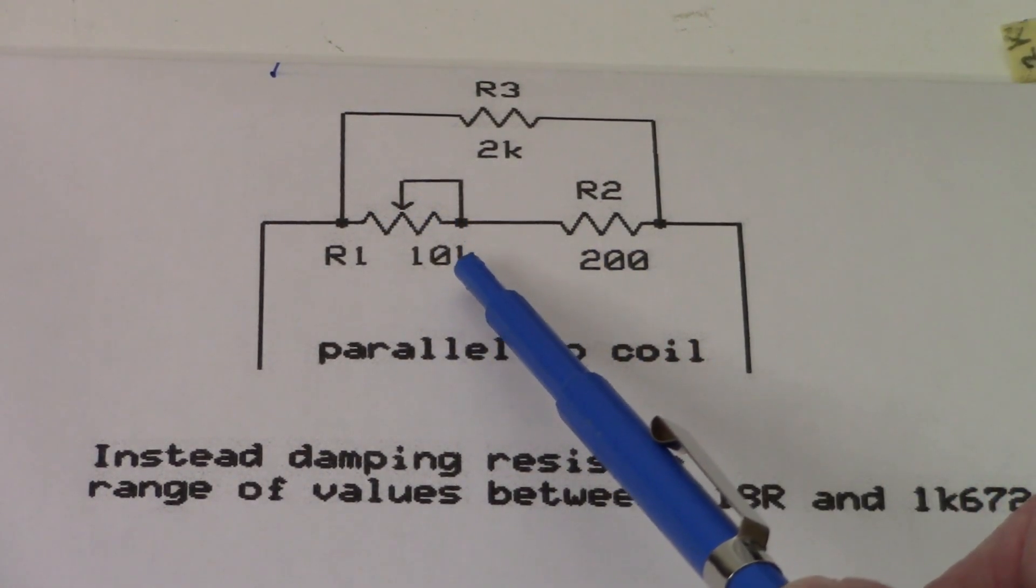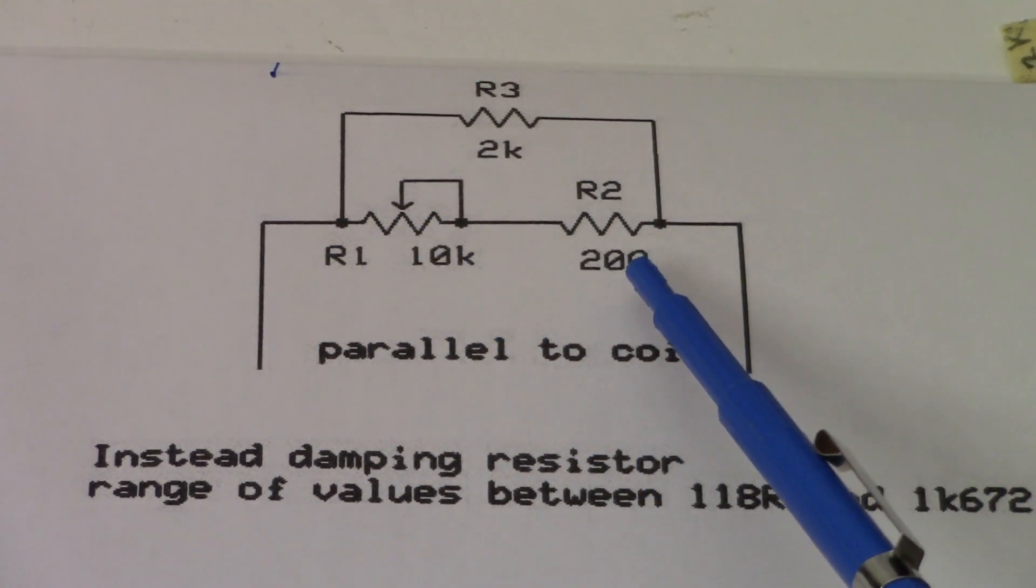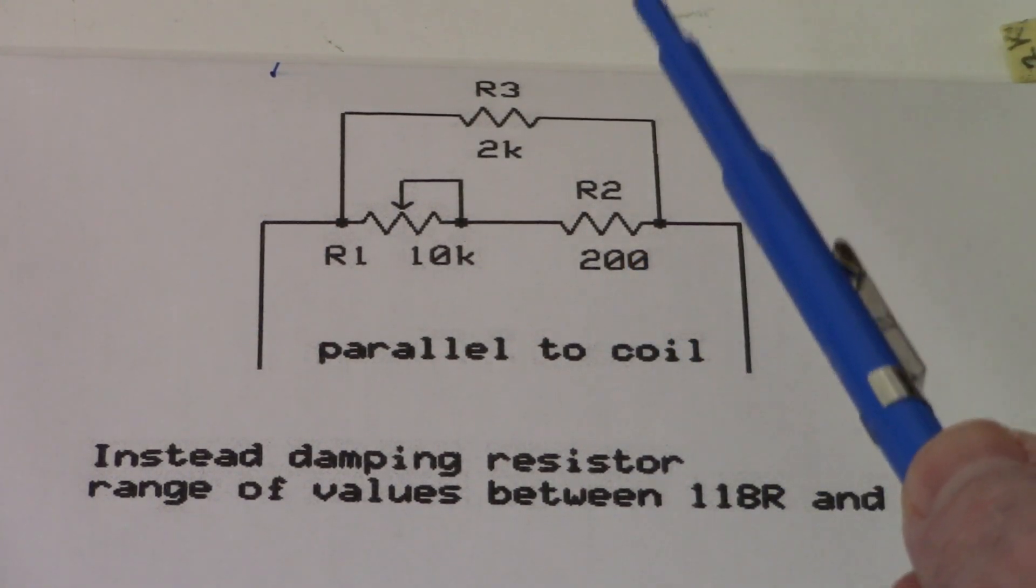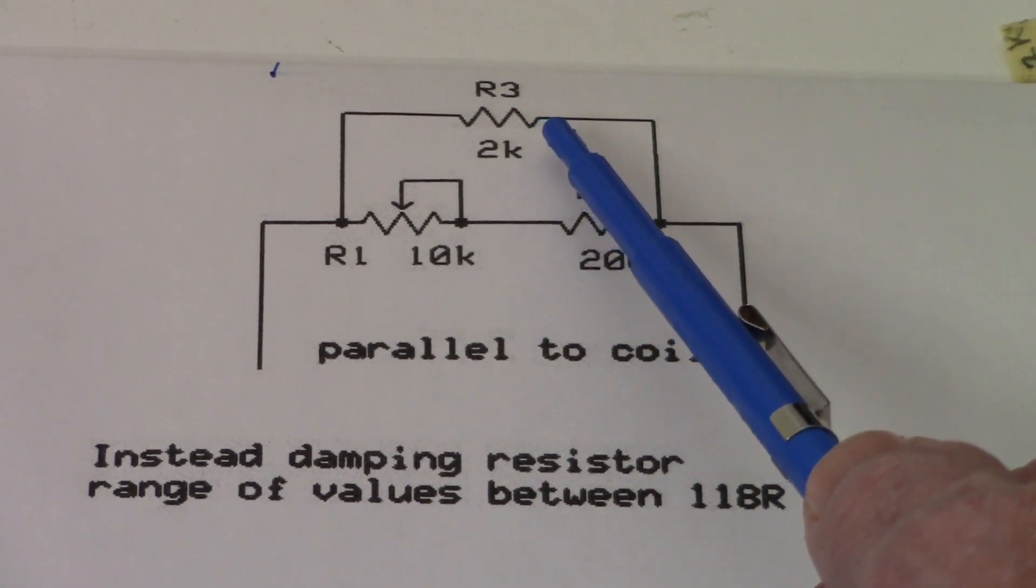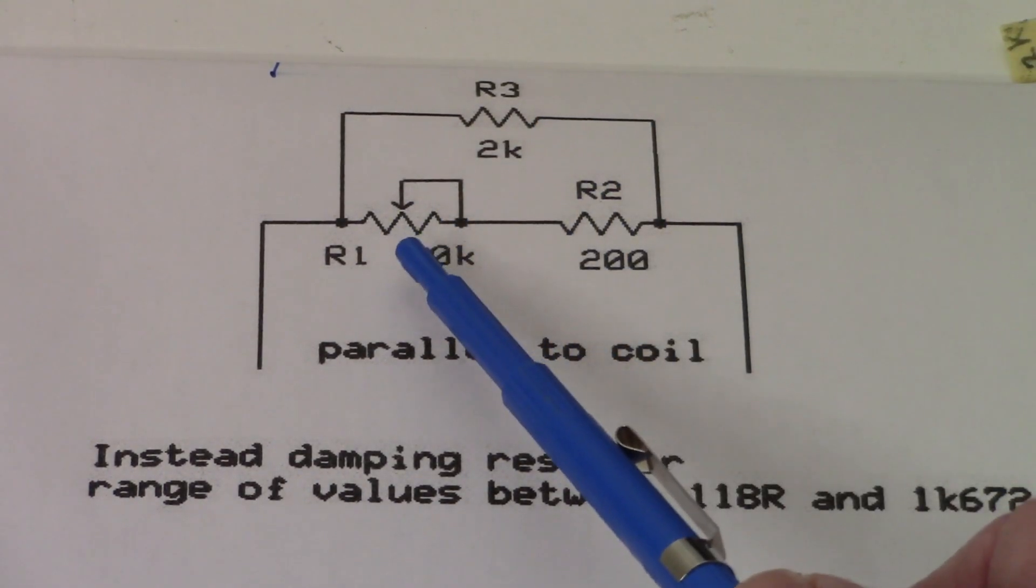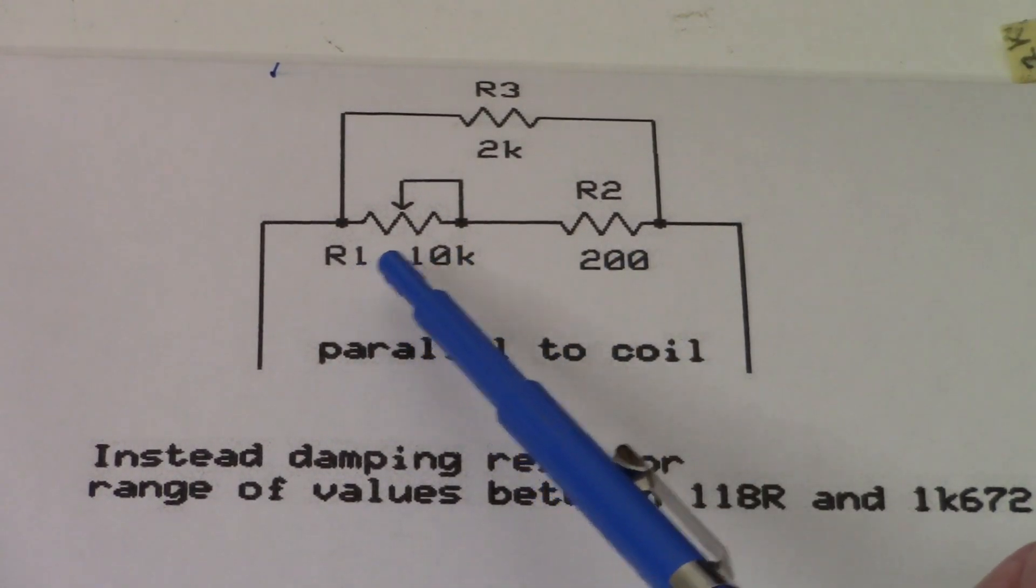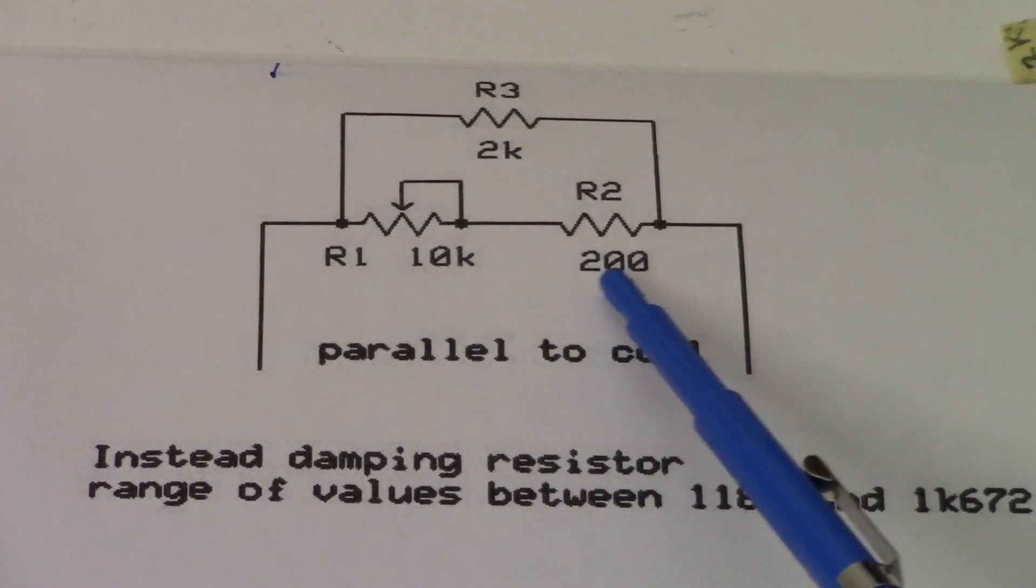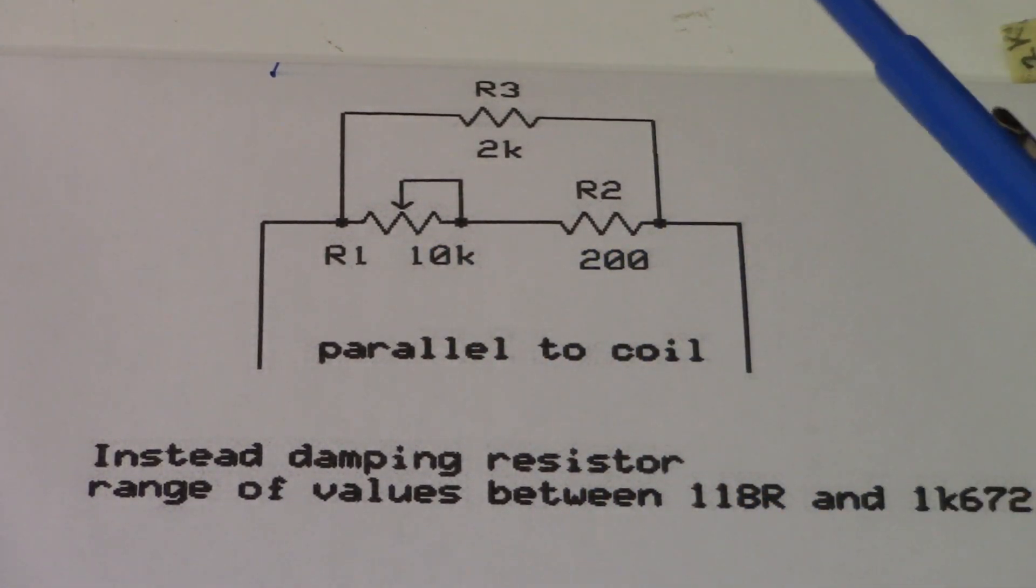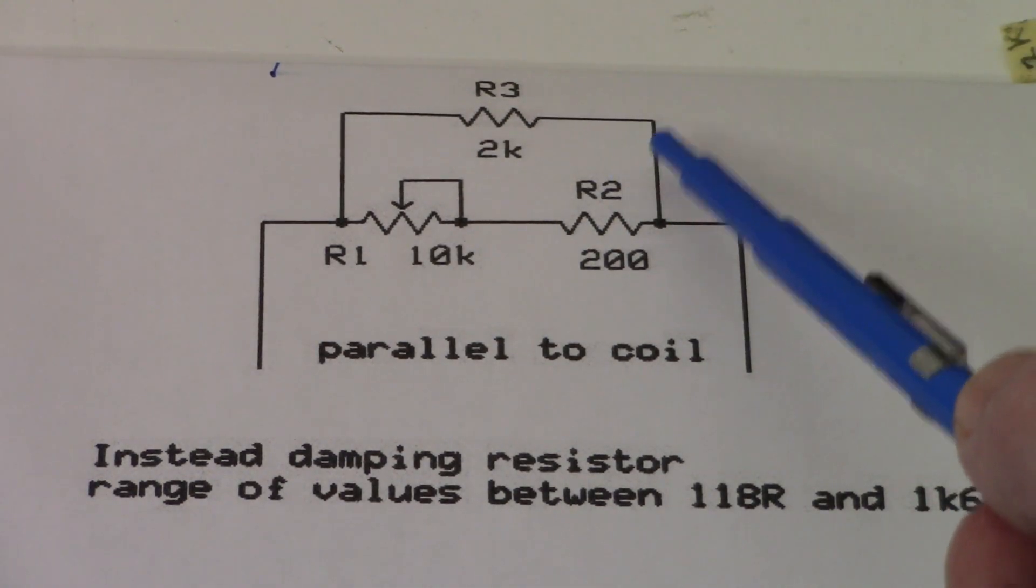Here we have a 10k potentiometer, a 200 ohm resistor, and up here a 2k resistor. So the 10k pot and the 200 ohm resistor, they're in series with each other, and the 2k is in parallel with those.